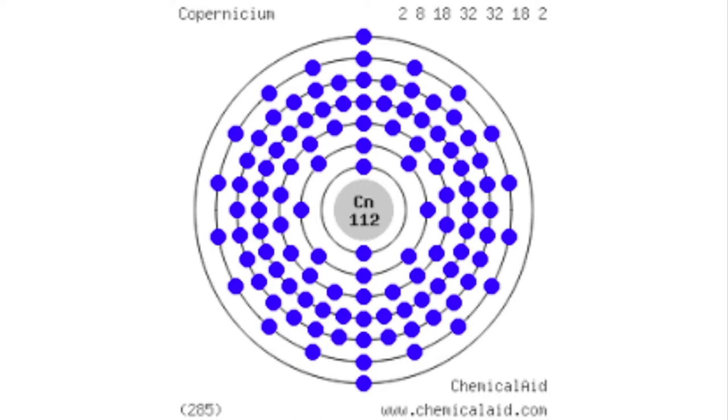Copernicium is a transition metal in group 7 of the periodic table. It has 112 protons, 112 electrons, and 173 neutrons.